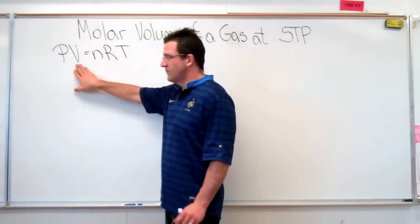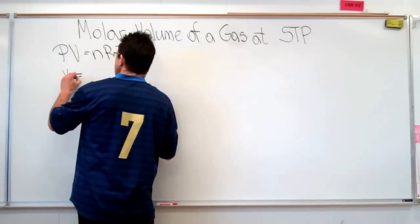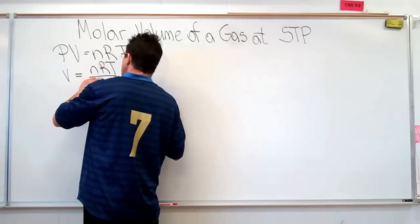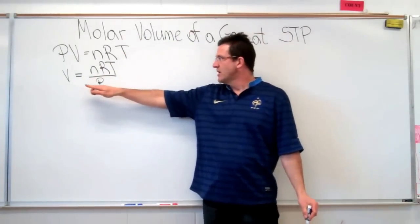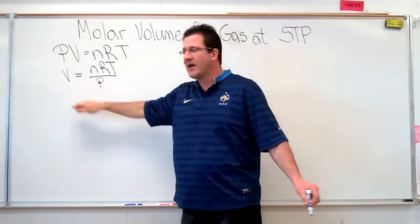So what we're going to do, first thing we're going to do is solve this equation for the volume. So you can see the volume is equal to nRT divided by P. This is the equation we can use, and hopefully we'll come up with an answer that's 22.4 liters. So let's see how we do that.